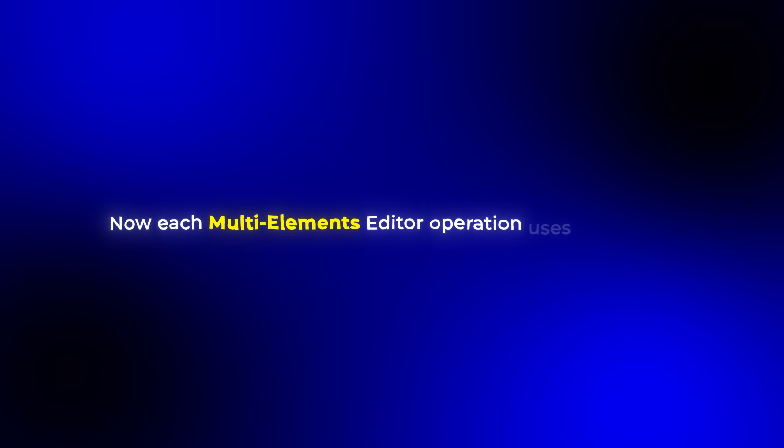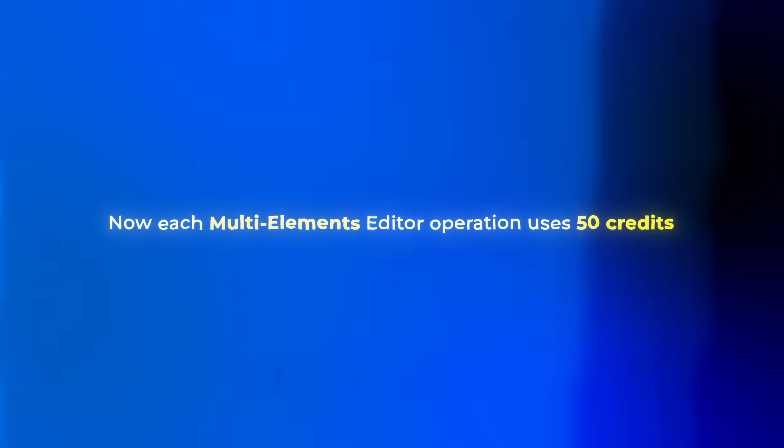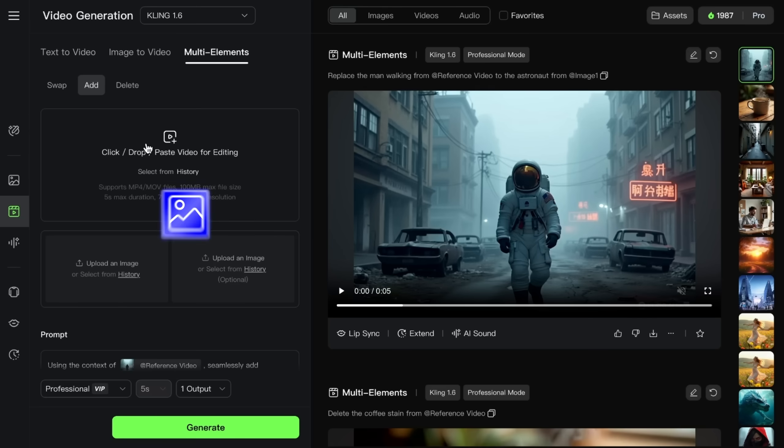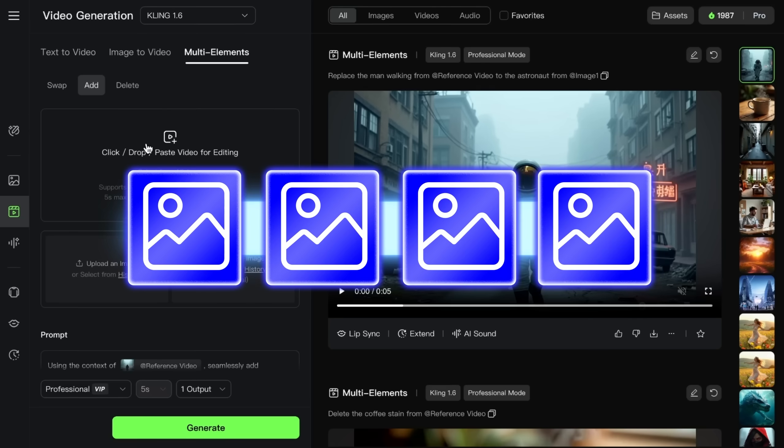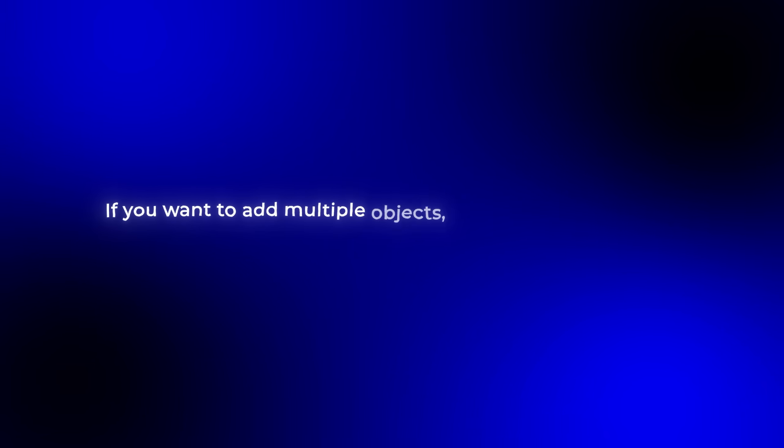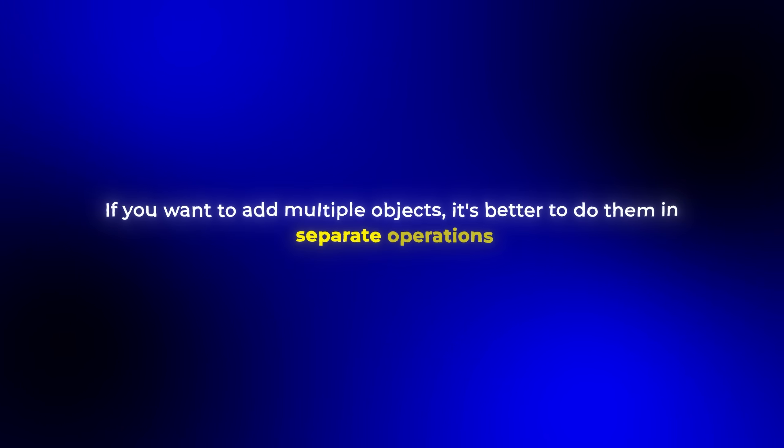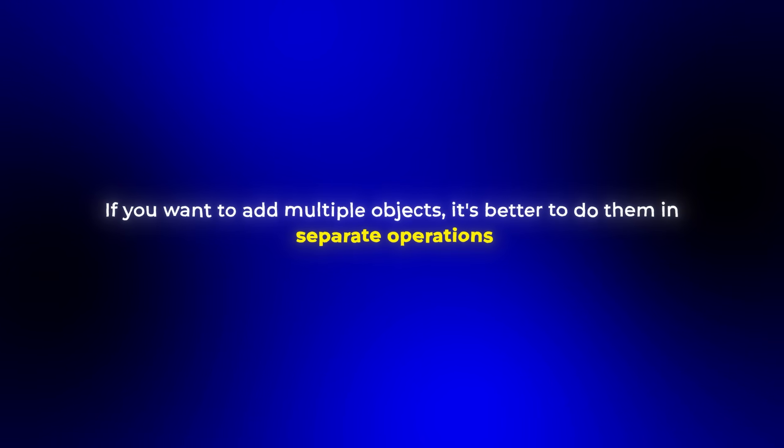Each multi-elements editor operation uses 50 credits, which is more than standard video generation. However, considering how amazing it is, it's absolutely worth it. I've also found that while you can technically use multiple images with the add function, you'll get better results by adding one element at a time. If you want to add multiple objects it's better to do them in separate operations, using the output of each step as the input for the next.